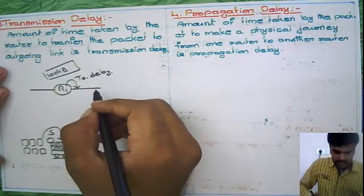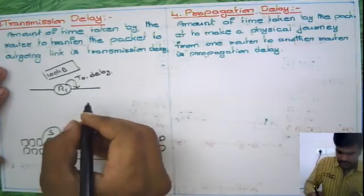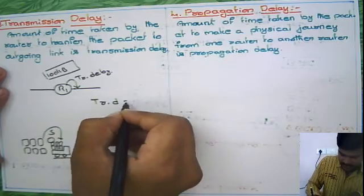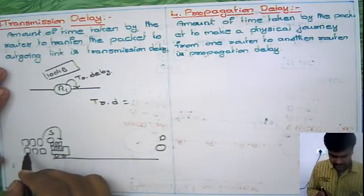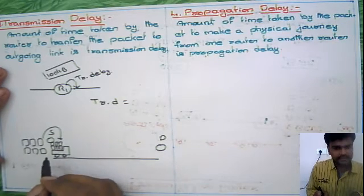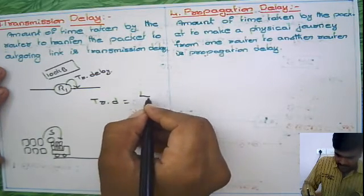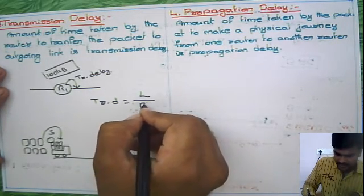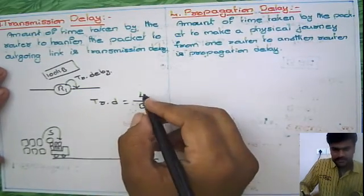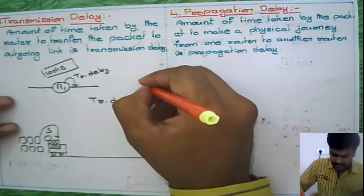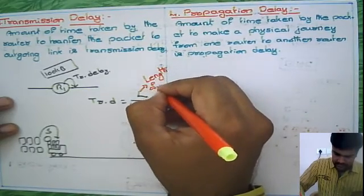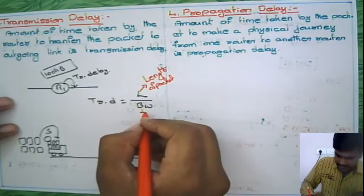For this we have one formula. For transmission delay, it depends on how many items you have here and how much capacity this one has. Based on that it will take time. Your packet size is how much? Then it depends on bandwidth. So length by bandwidth. L refers to length. Here L is the length of the packet.